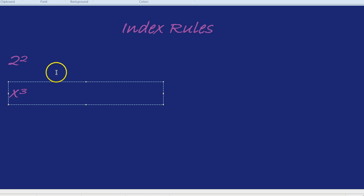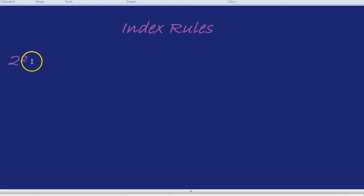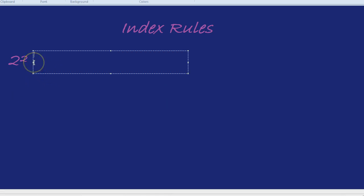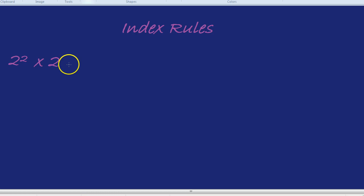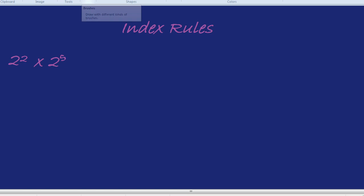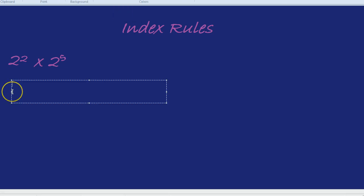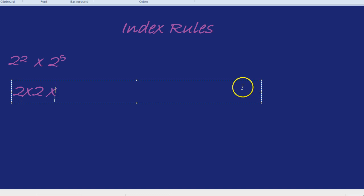What are the shortcuts I'm talking about? Let's take, for example, 2 squared multiplied by 2 to the power of 5. The long way of doing that would be to say: 2 squared is 2 times 2, and then we're multiplying that by 2 to the 5th, which is 2 times 2 times 2 times 2 times 2, and then work all that out.